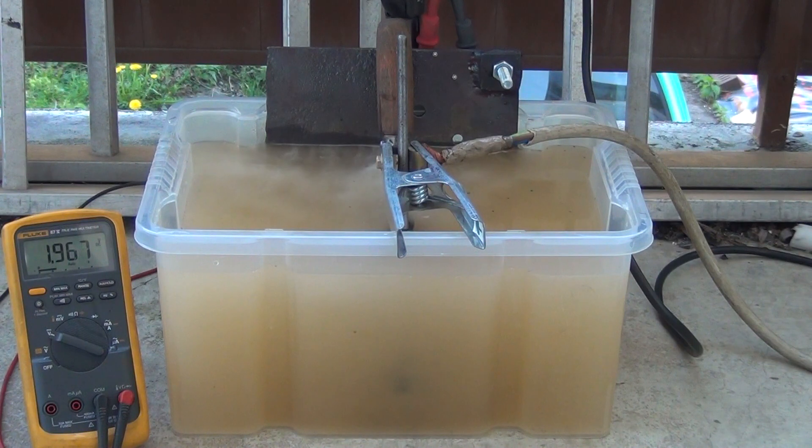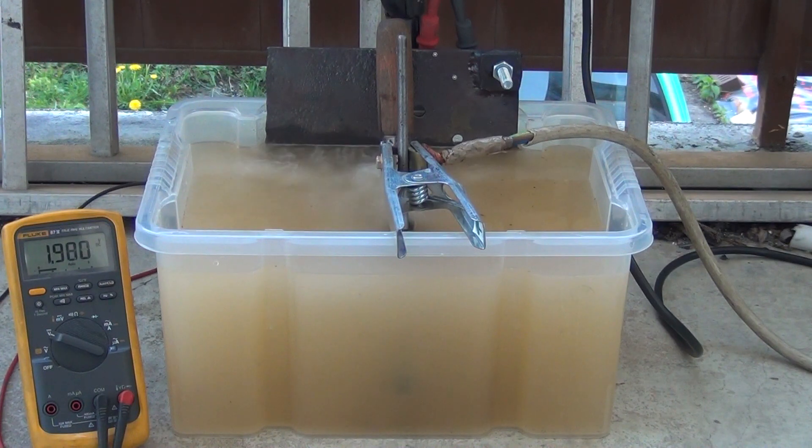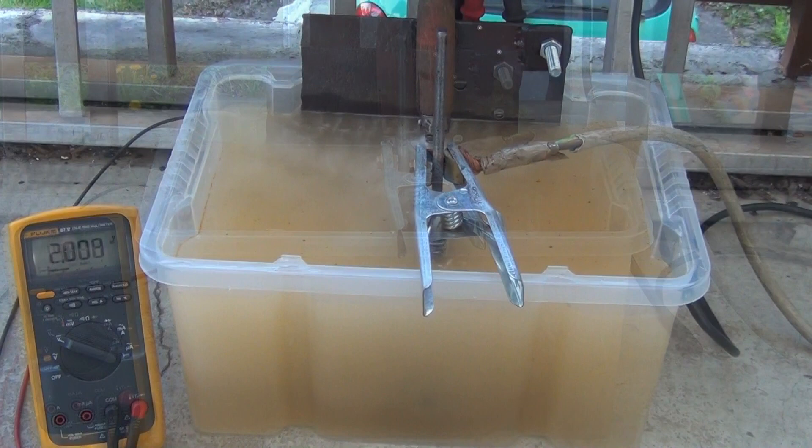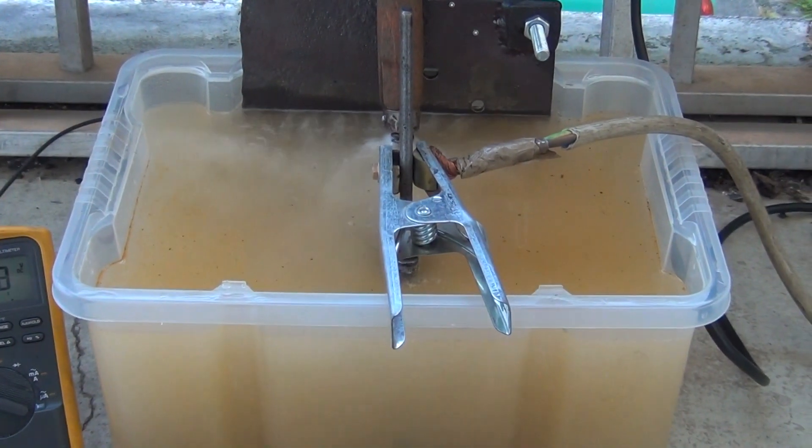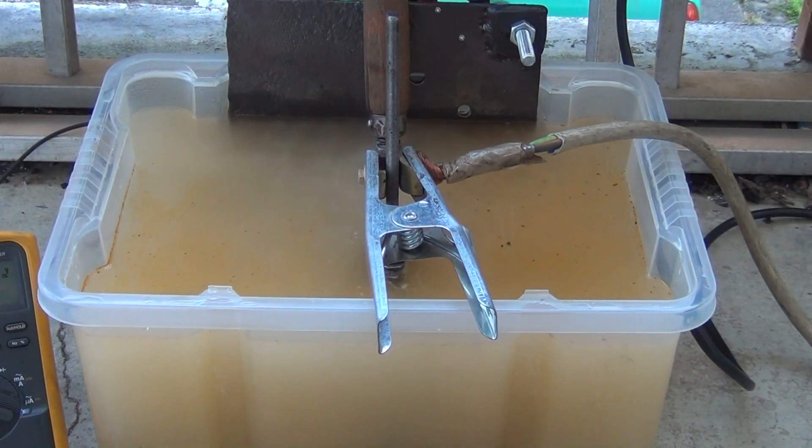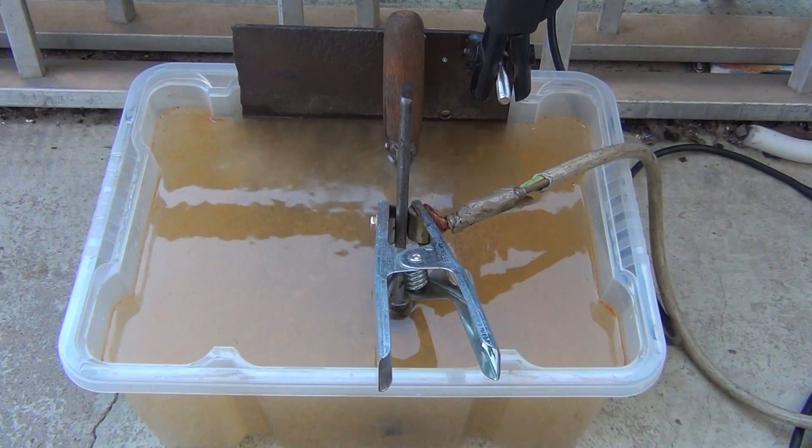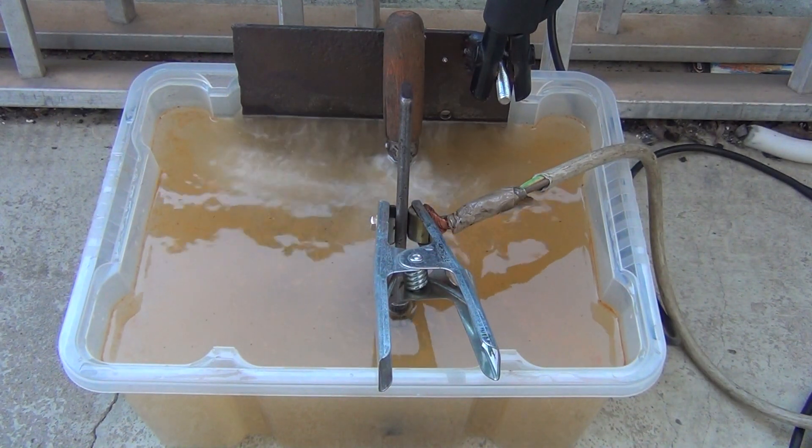And P equals I squared times R, which means that the power dissipation inside the power resistor alone is at this point at around 80 watts which far exceeds its power rating. That is why we can only do this for a couple of seconds. And here you already see black smoke coming from the resistor. That is why I will now connect the clamp directly to the 10 millimeter screw not using the power resistor any longer.